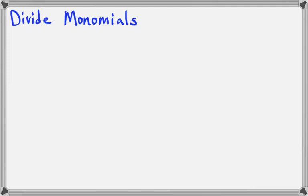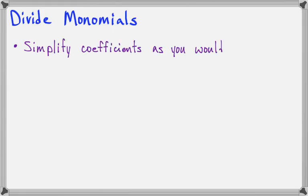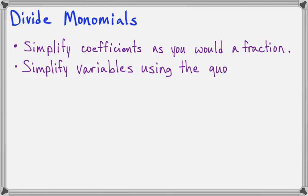In this lesson we're going to talk about how to divide monomials. We've already learned all the exponent rules we need for this, and so now let's look at a couple together. What we're going to do is simplify the coefficients just the same as you would a fraction, and then use the quotient rule to simplify the variables.